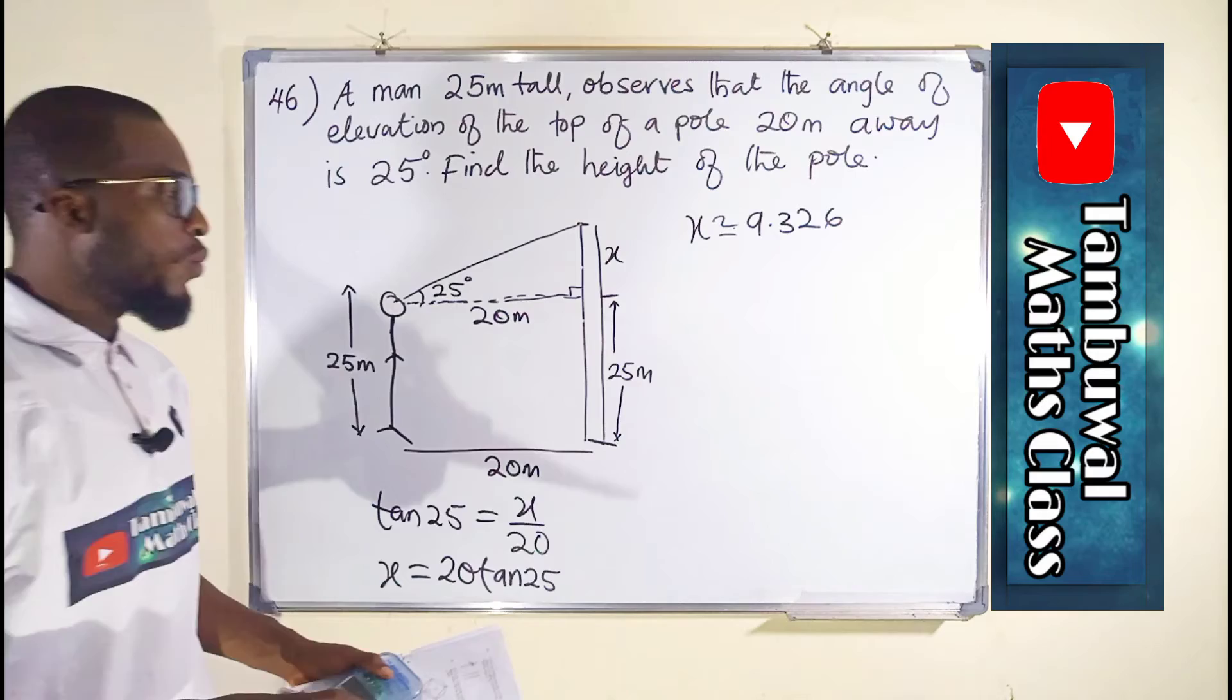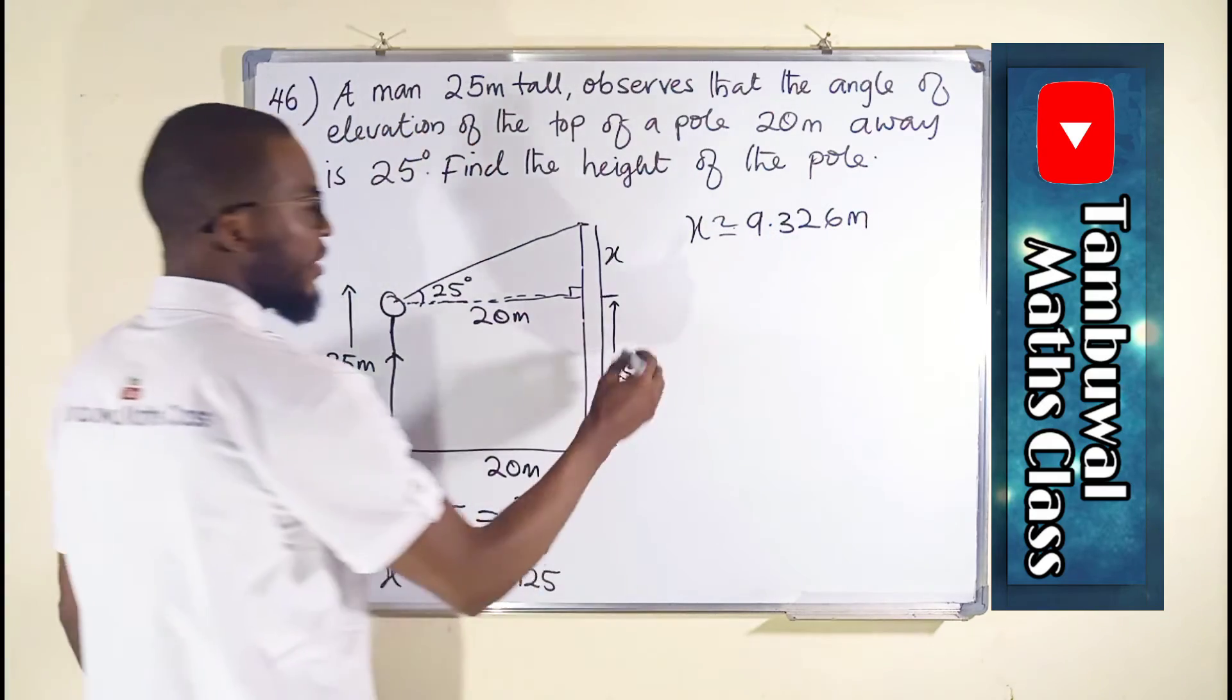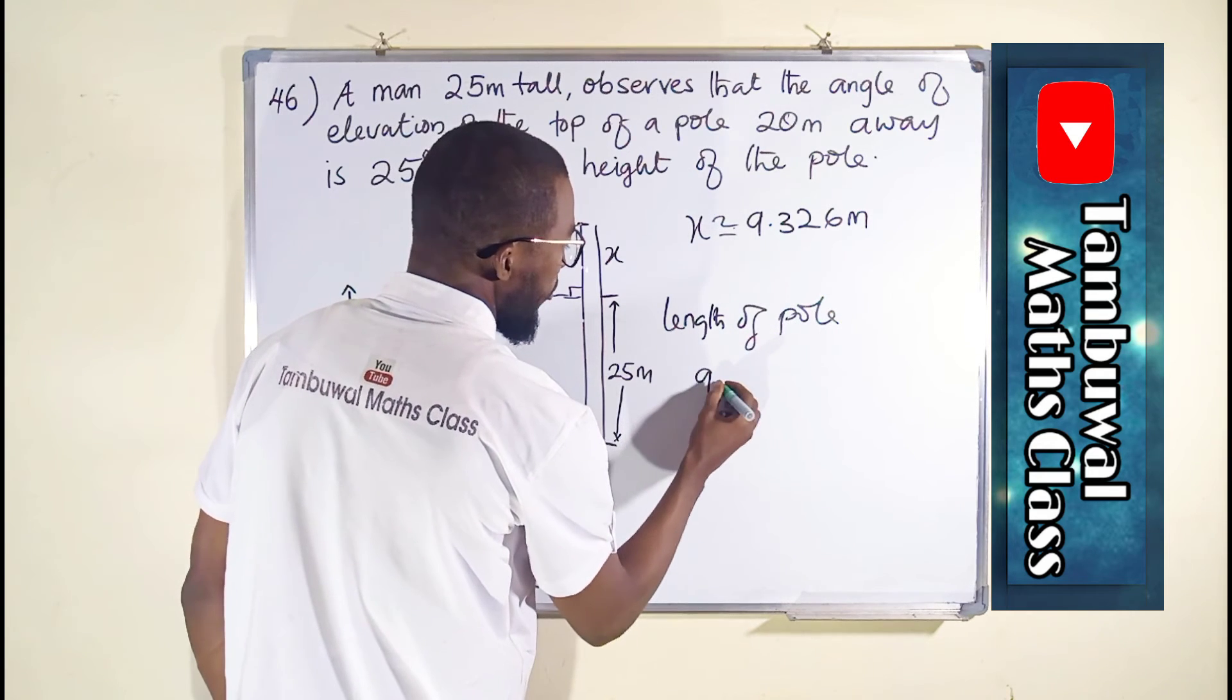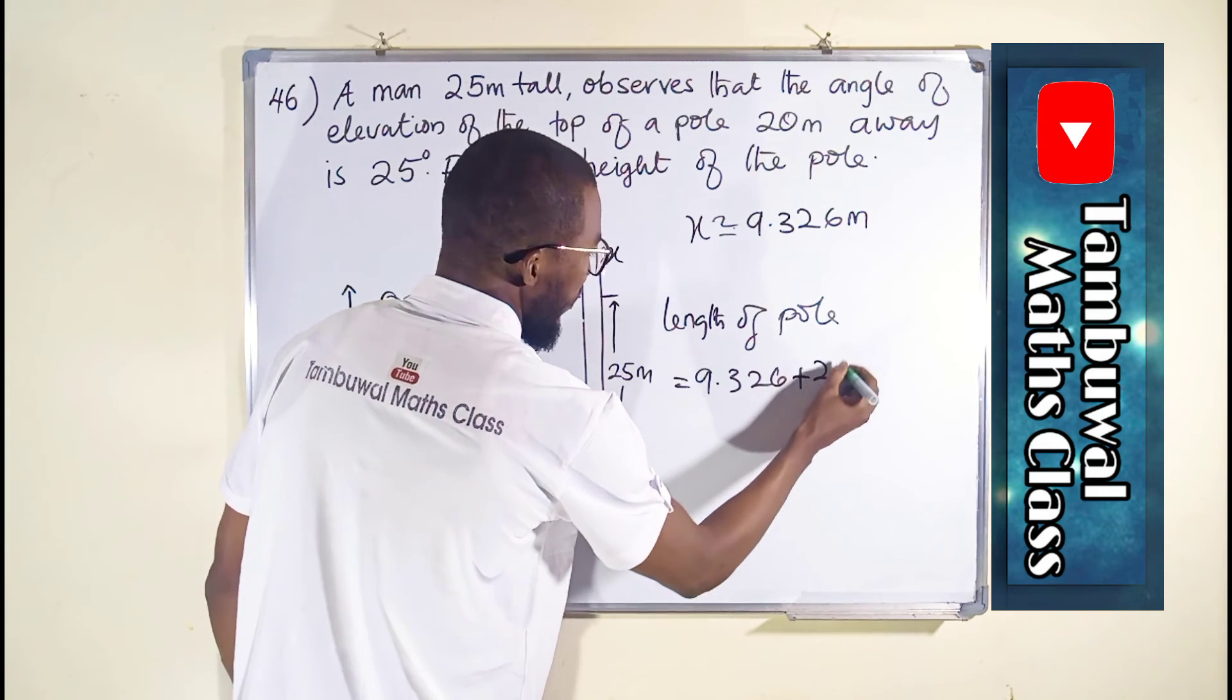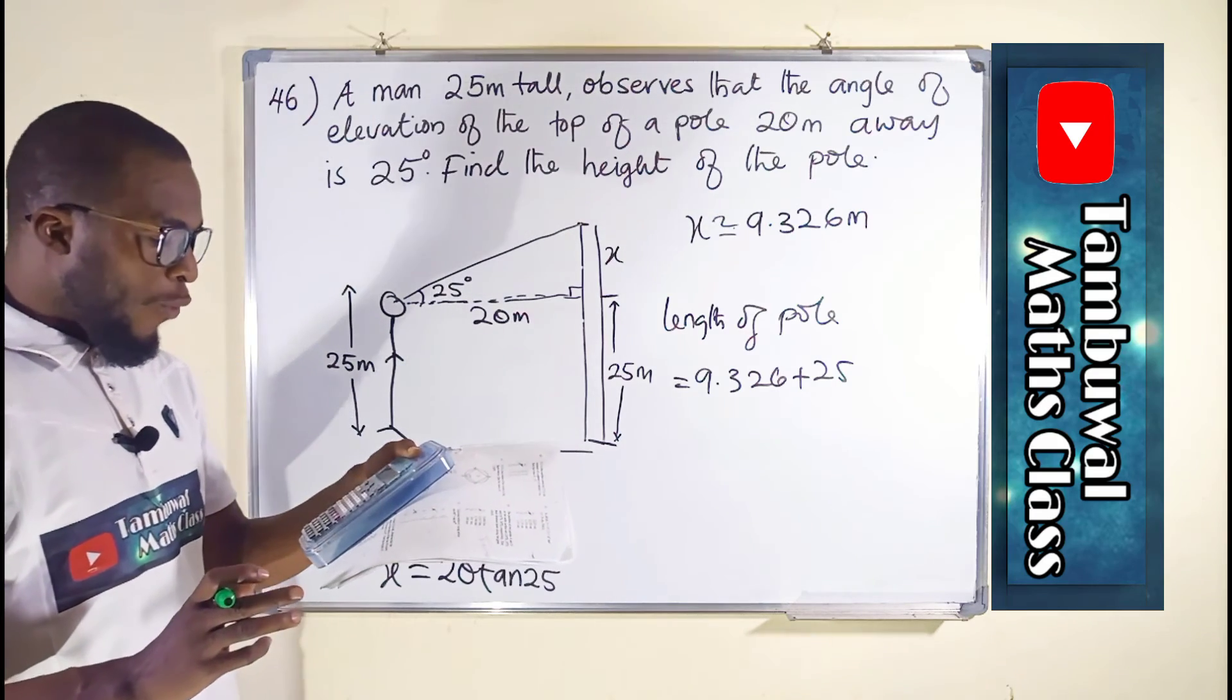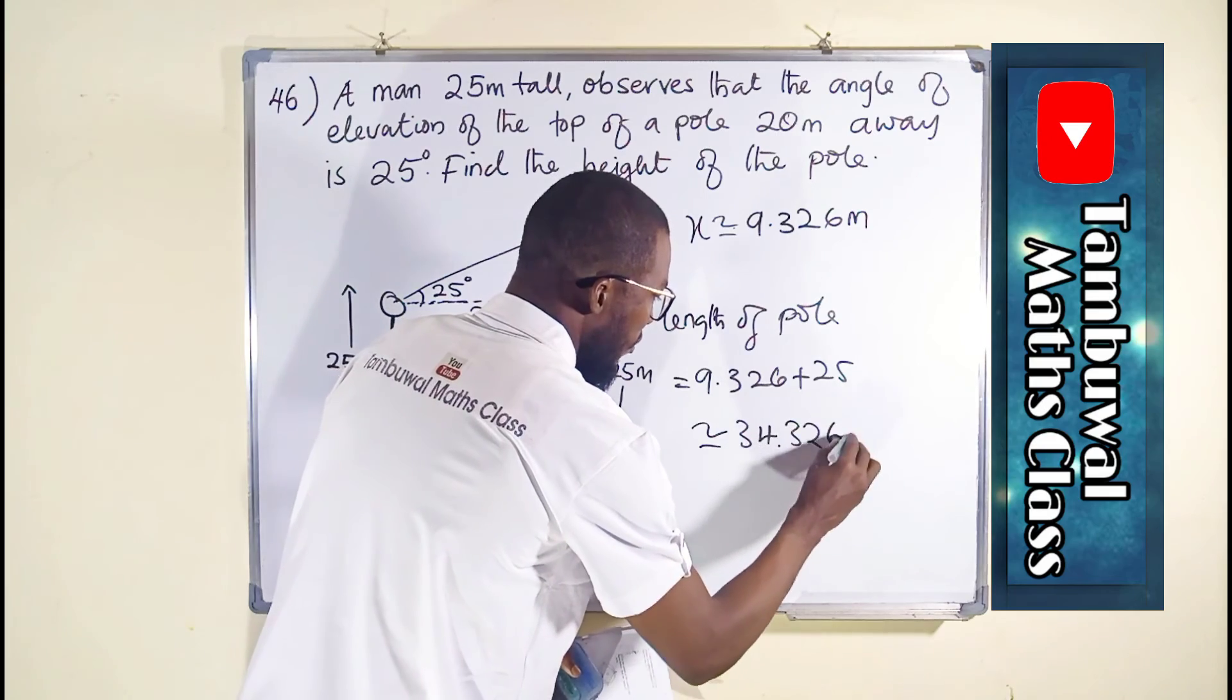But this is not what we are looking for. We are looking for the total length of this pole. Therefore, we are going to add this value to this value. This is meters. So the length of this pole will be 9.326 plus 25, equals 34.326, approximately. 34.326 meters.